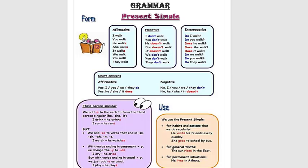Let's check together the third person singular form. We add S to the verb to form the third person singular — he, she, or it. Like: I drink, he drinks. I run, he runs. But sometimes we have other cases. Sometimes we need to add ES instead of S, because of verbs that end with SS, SH, CH, X, and O. Like: I watch, he watches.